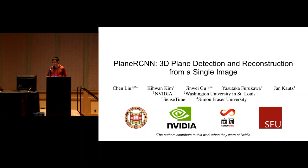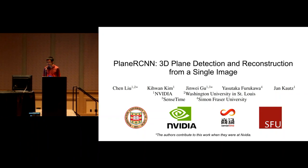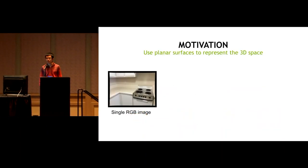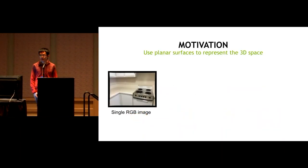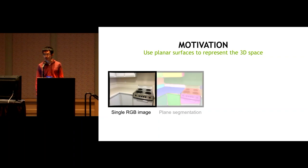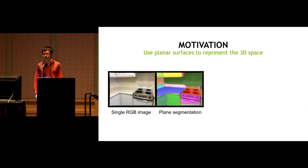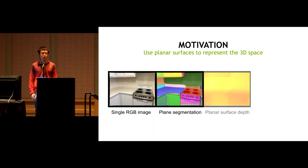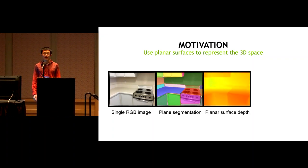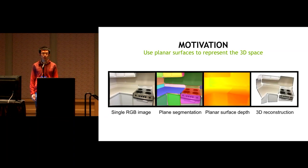I'm Chen. I'm going to talk about PlaneRCNN for 3D plane reconstruction. Given a single RGB image, we want to segment it into a set of planar regions, and for each planar region estimate its 3D parameters. Based on the segmentation and 3D parameters, we compute a depth map and a mesh model that is smooth and enables many applications.